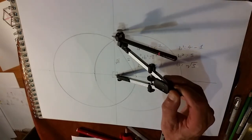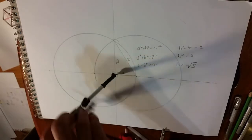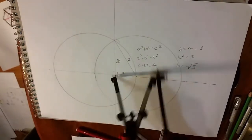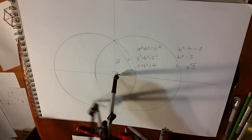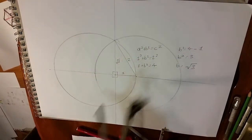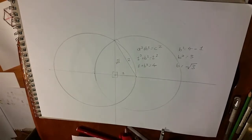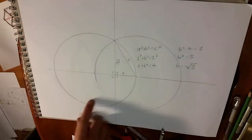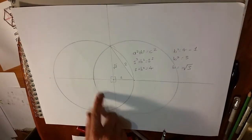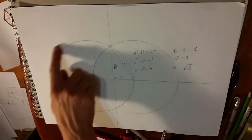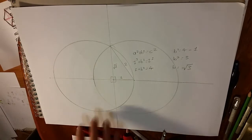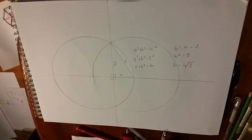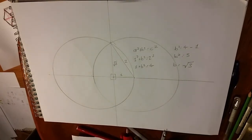I'll put my compass on the center and draw a third circle. I'm using a painter's pencil to separate it from the original Vesica Piscis set.